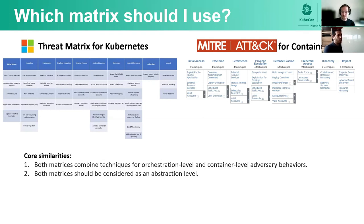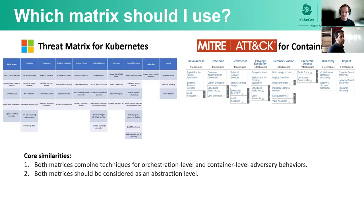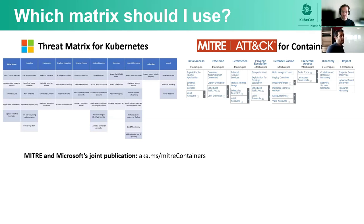With that being said, it's important to highlight the core similarities. Each matrix combines adversary behavior techniques for both the orchestration level and container level. Both matrices can be considered as an abstraction layer — for example, if an adversary installs a backdoor within a container, that behavior would be covered by the Linux matrix instead of the containers matrix. To learn more on the evolution of the matrices and the process behind building them, please read the MITRE and Microsoft joint publication.